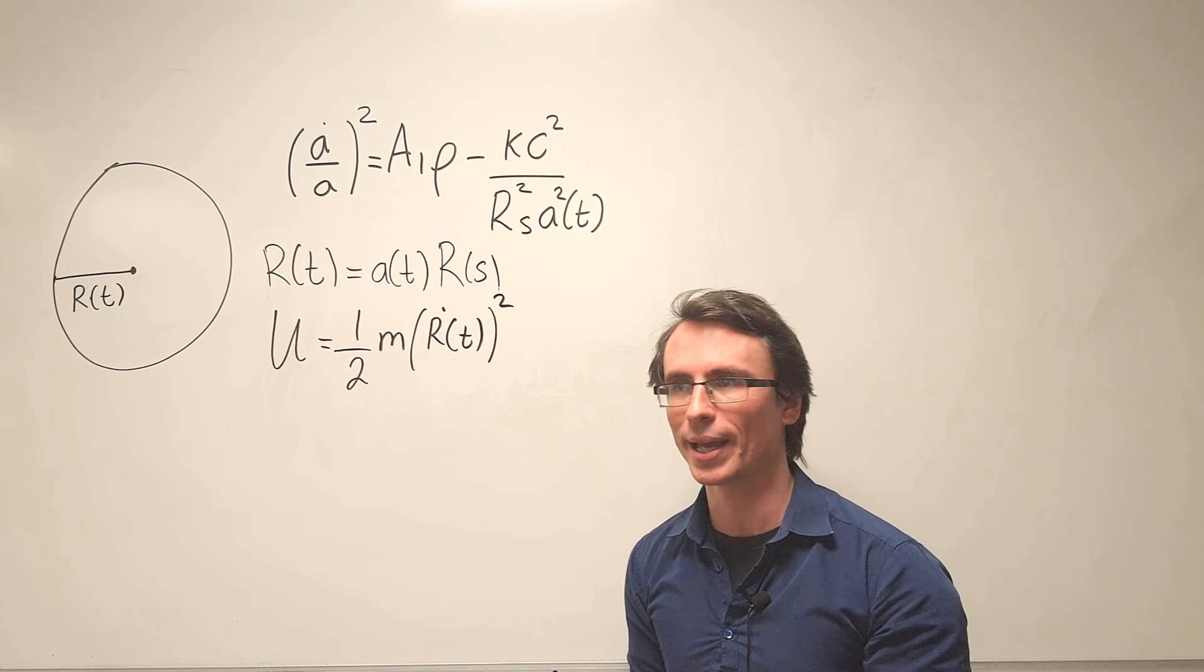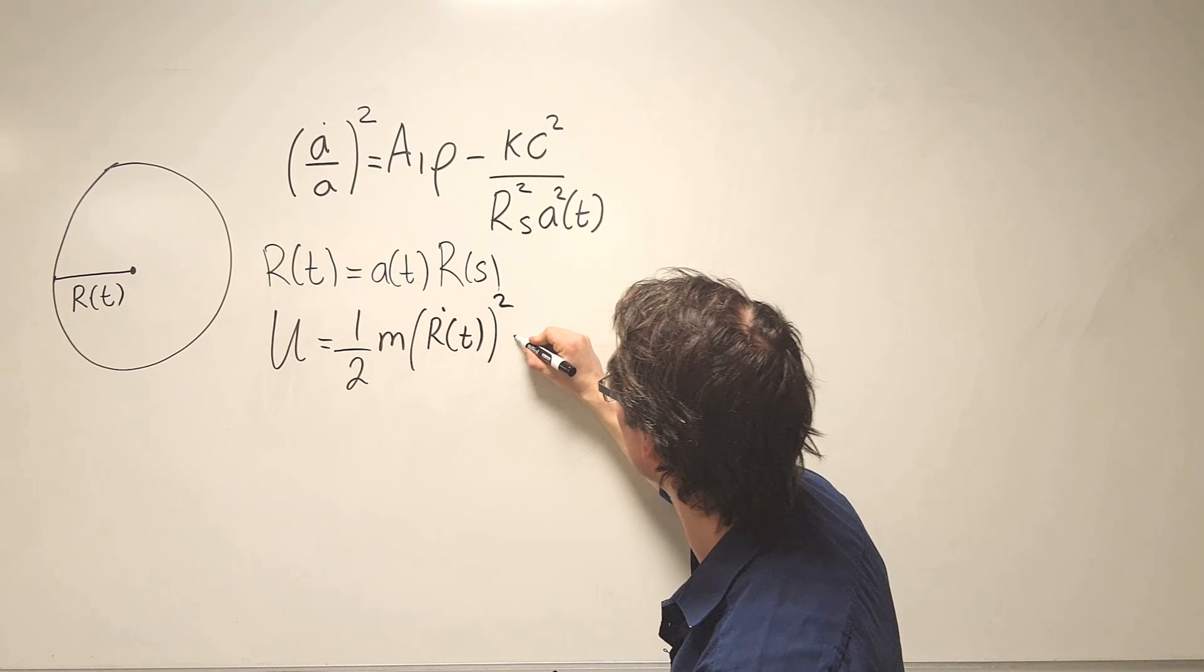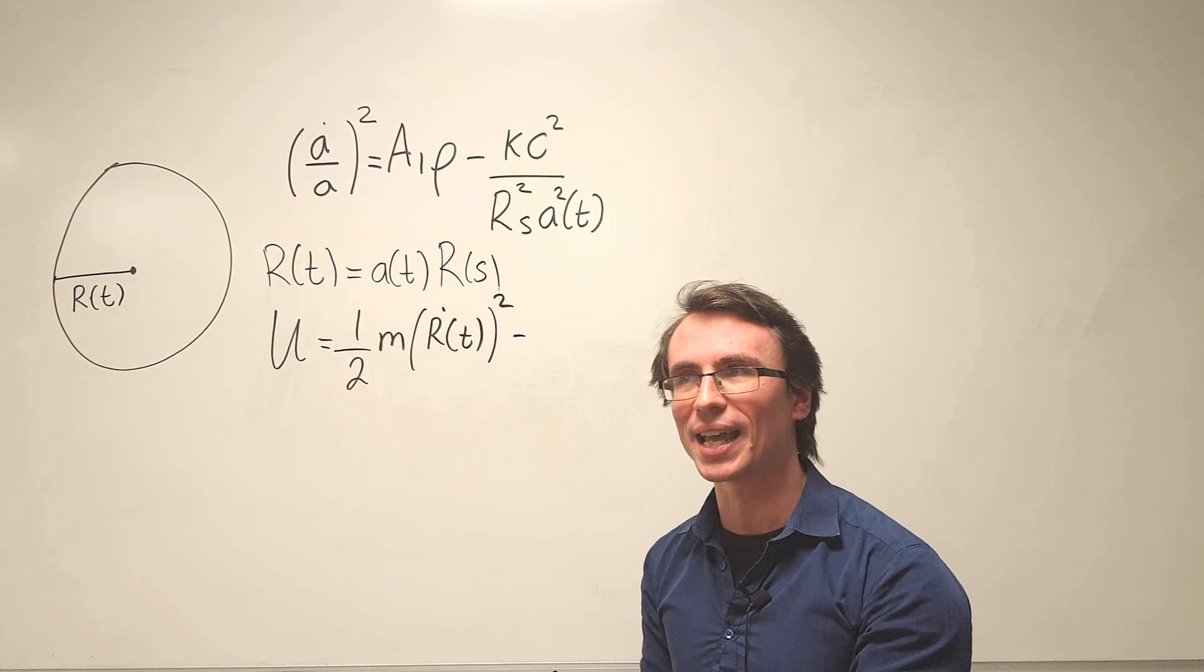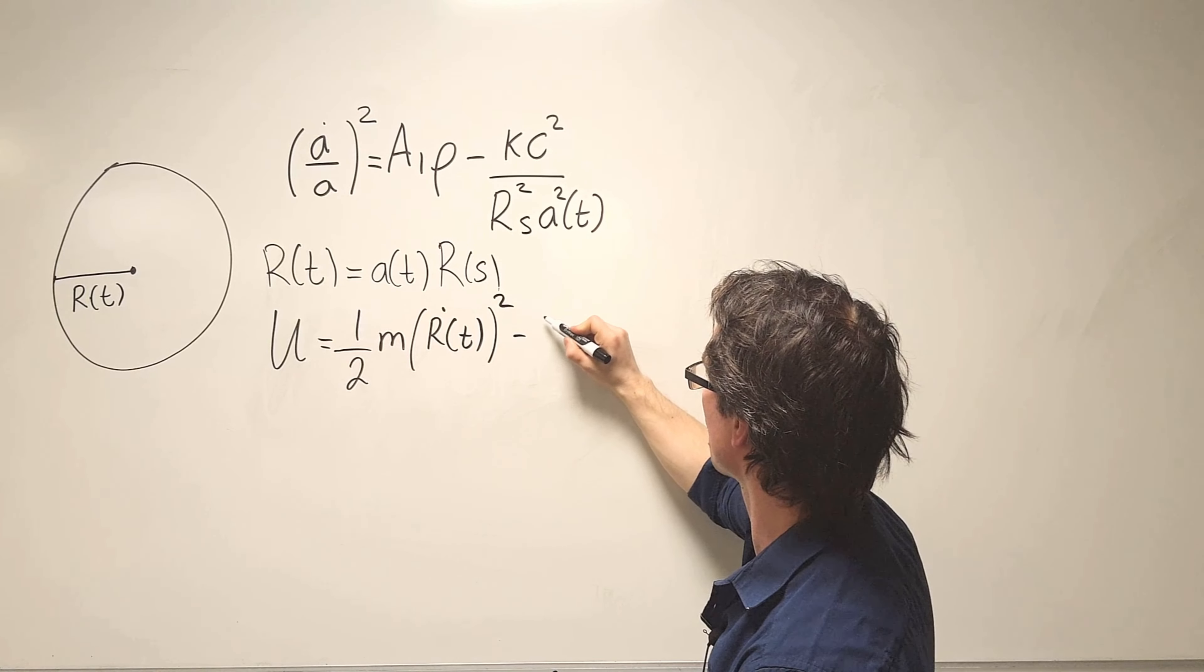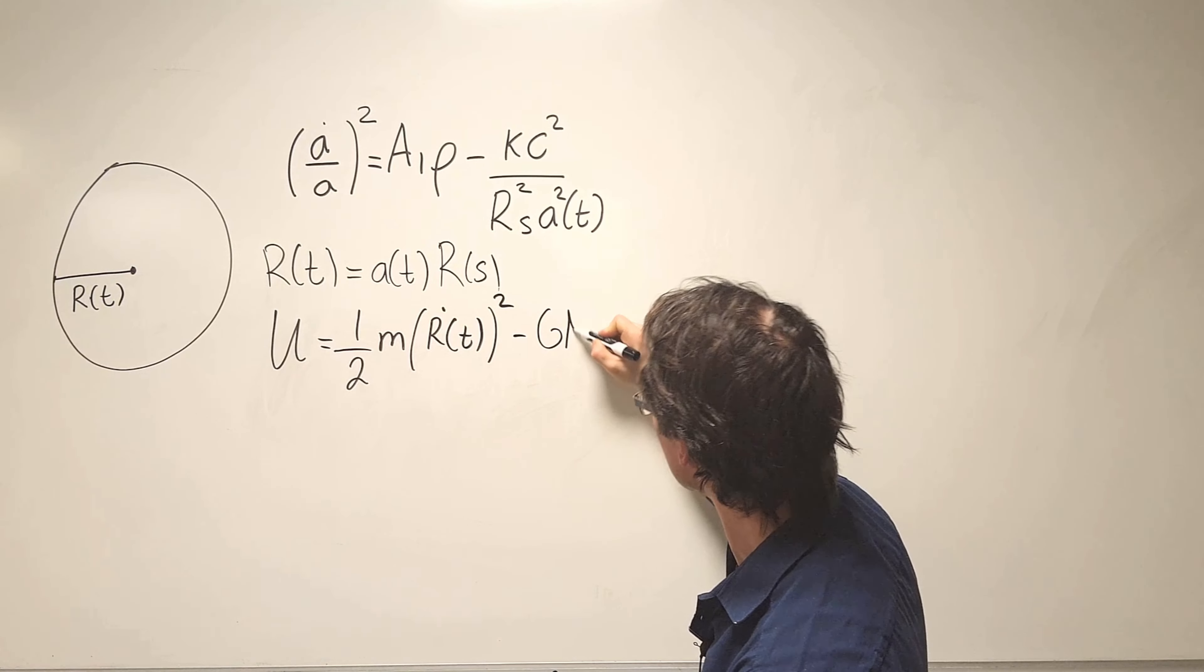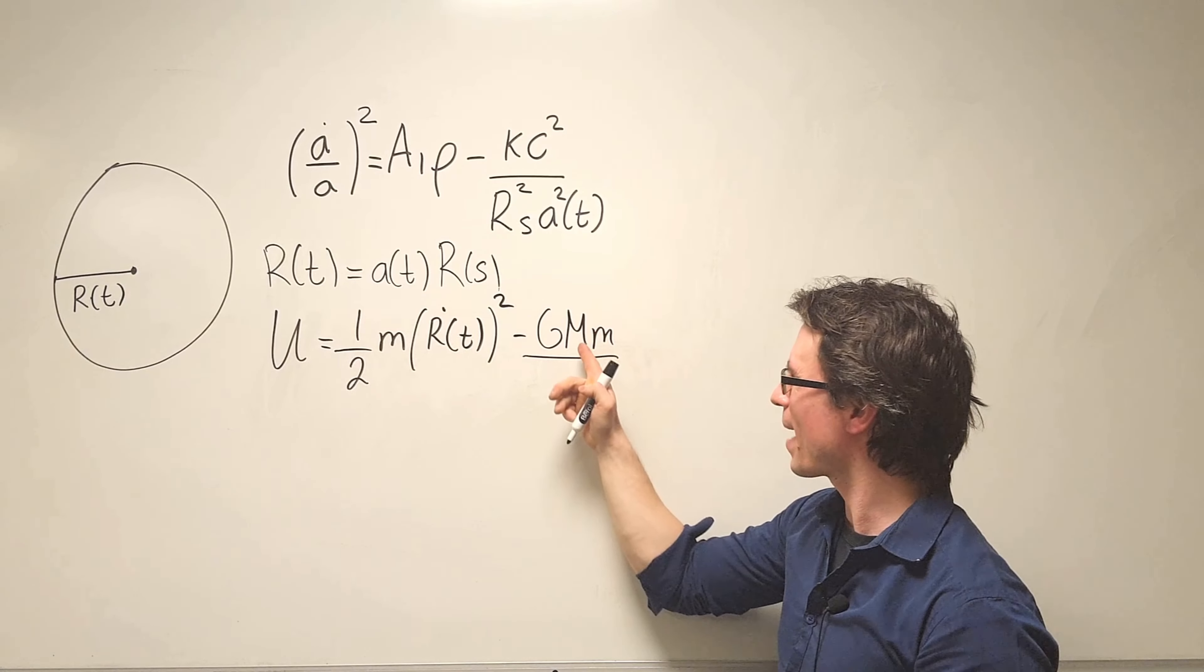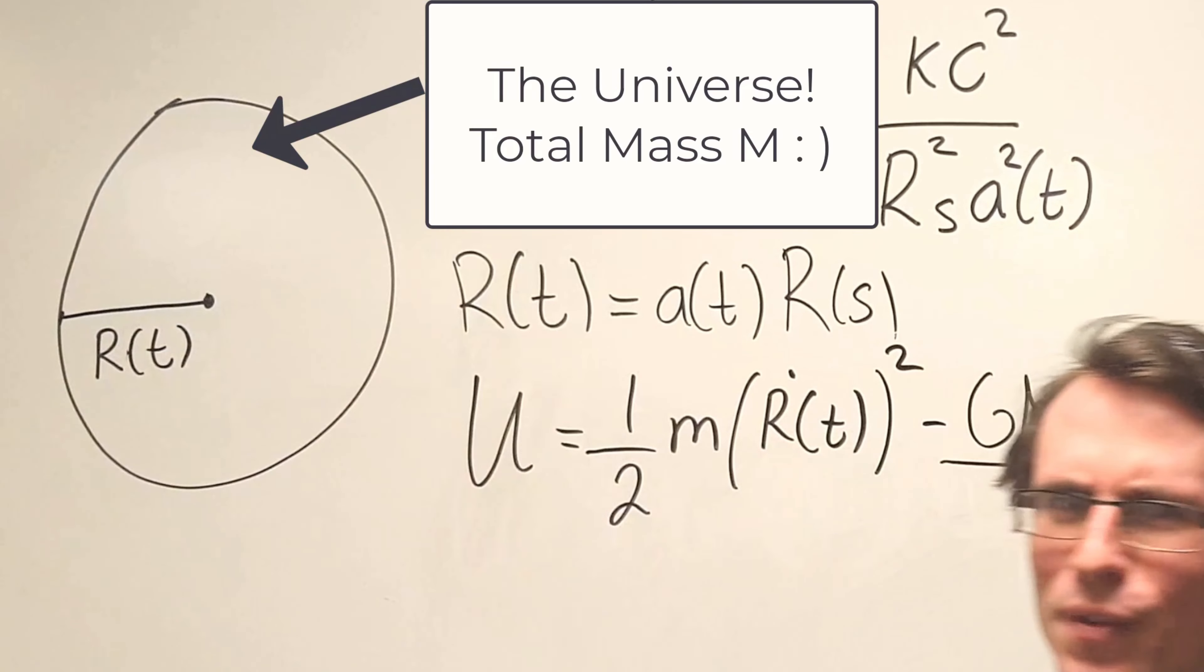This is just the kinetic energy though. We need to take into account the potential energy. In physics, the gravitational potential energy is actually negative to represent the attractive nature of gravity. So this will be equal to minus GM multiplied by the mass.